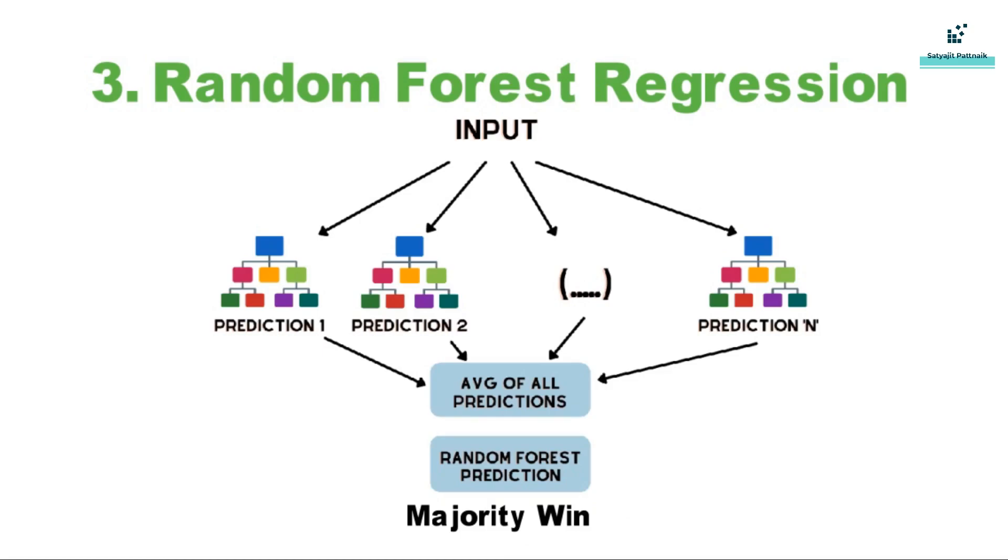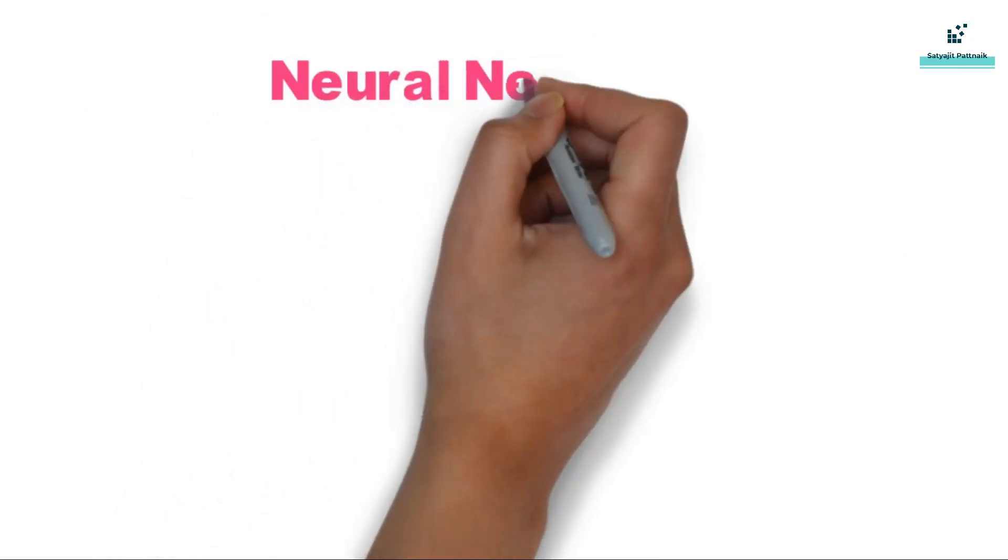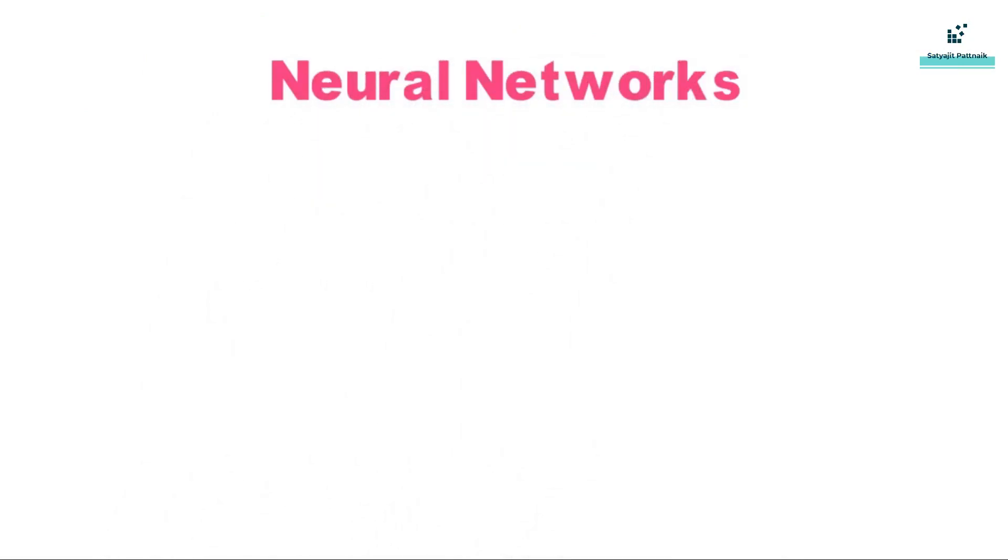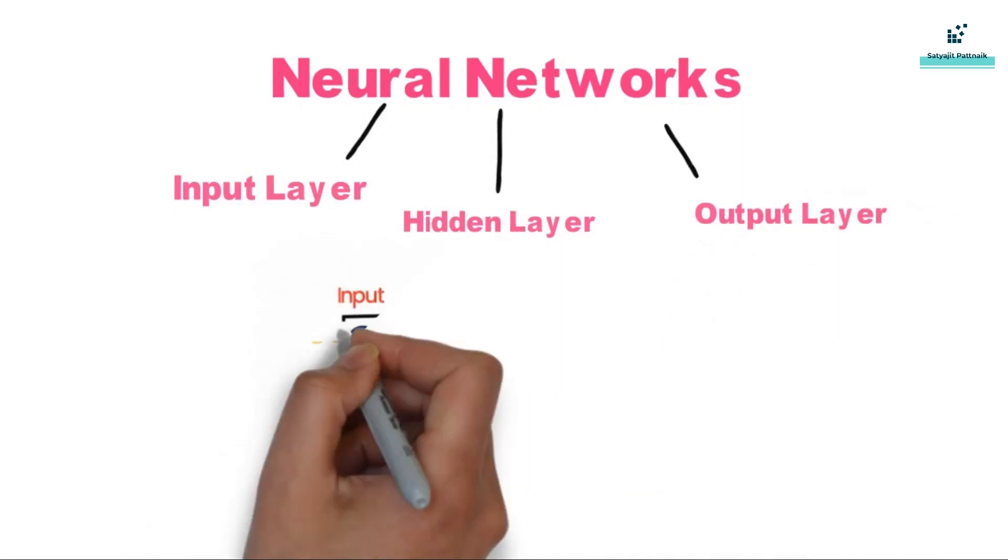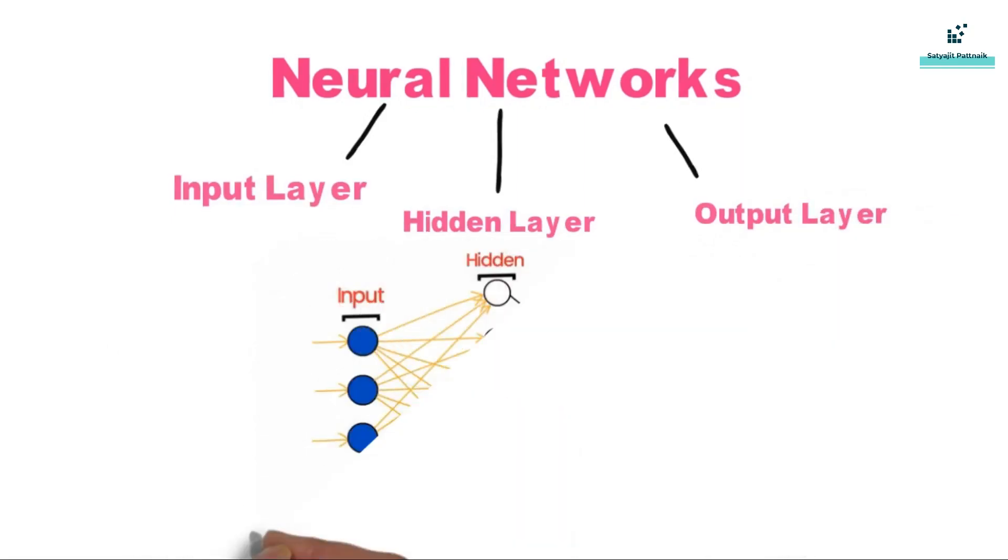The next thing we shall be discussing is neural networks. Next we talk about neural networks, it's a combination of multiple layers including input layer, hidden layer, and output layer, but the behavior is pretty similar to a human brain.